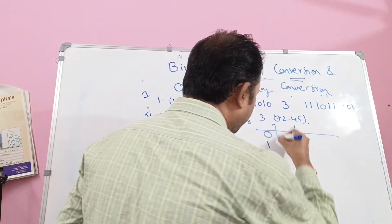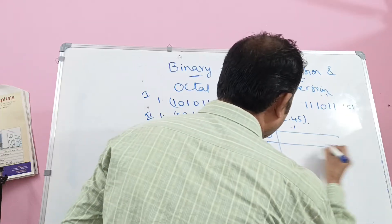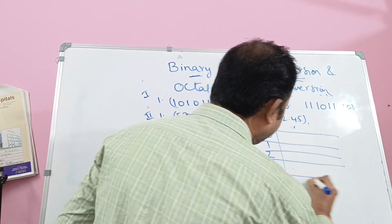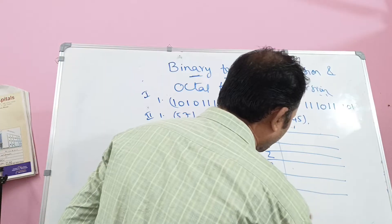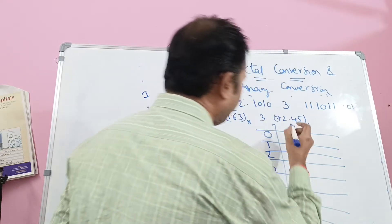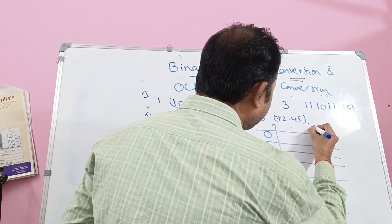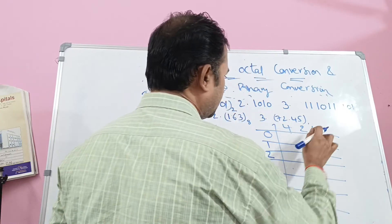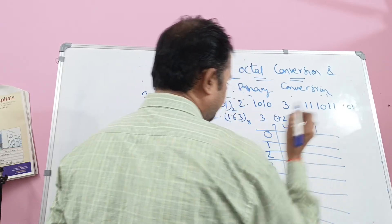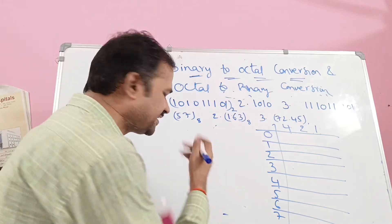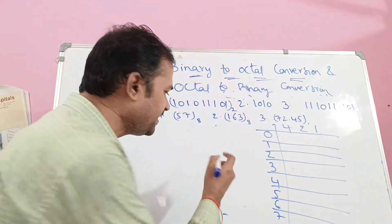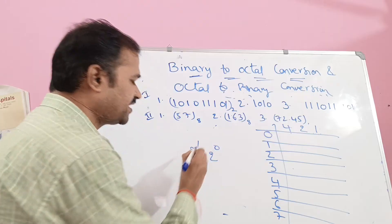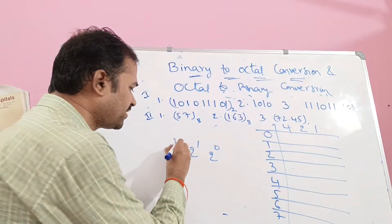So from 0 to 7, for representing these digits we use 4-2-1 notation. Here 1 means 2 power 0, 2 means 2 power 1, and 4 means 2 power 2. So we have to use this notation. The maximum number we can represent is 7, and 7 means all 1s.